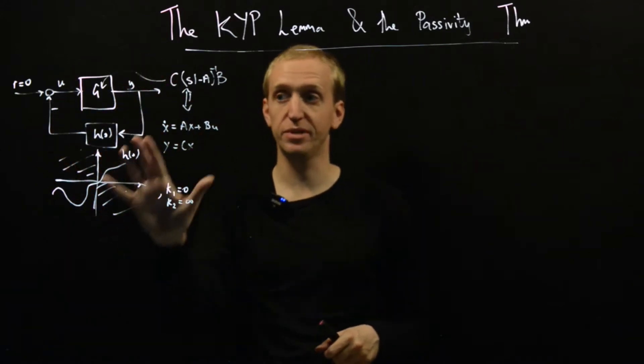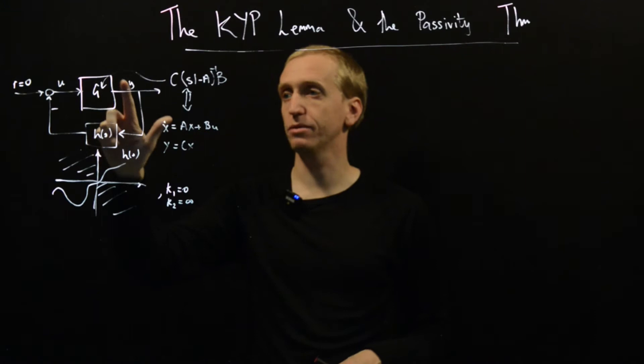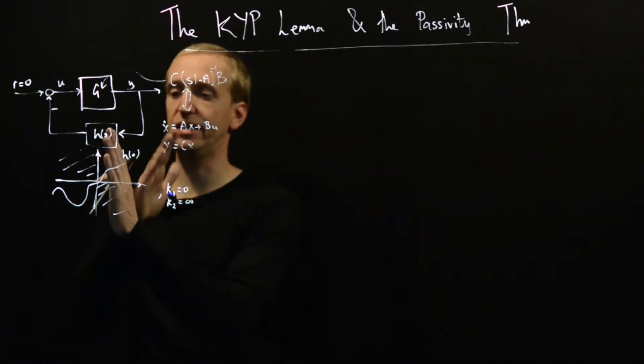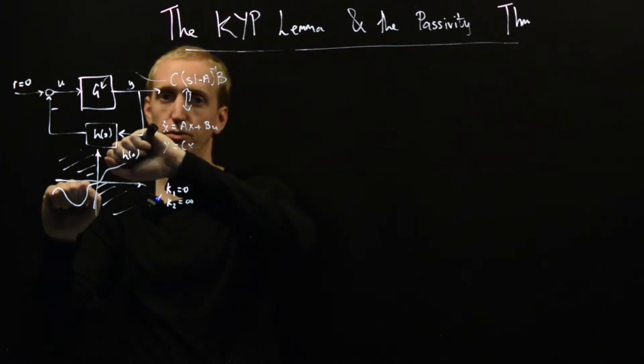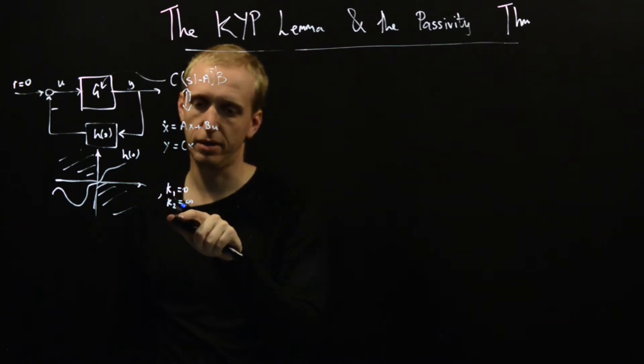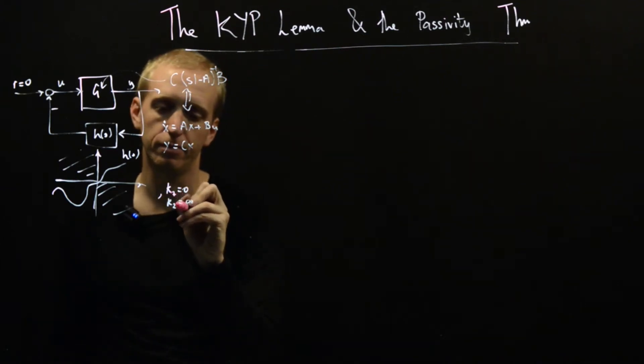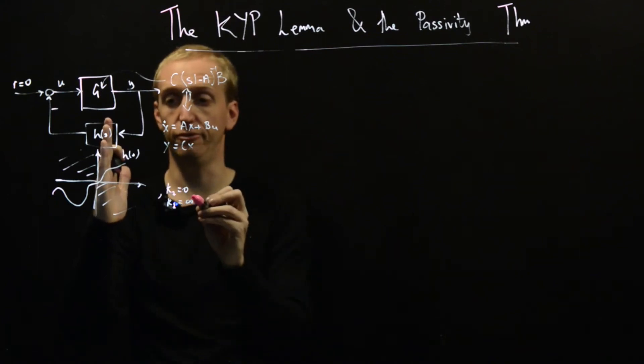We're interested in some setup that looks like this. We have a linear transfer function G in feedback with some sector-bounded nonlinearity. We're going to consider the case that the sector is the entire of these two quadrants here. Our lower sector has got slope zero and our upper line has got infinite slope.